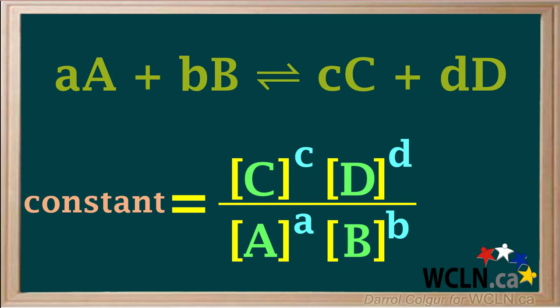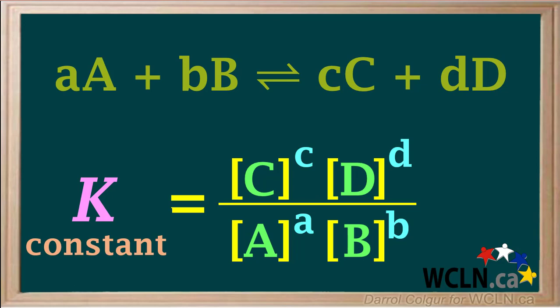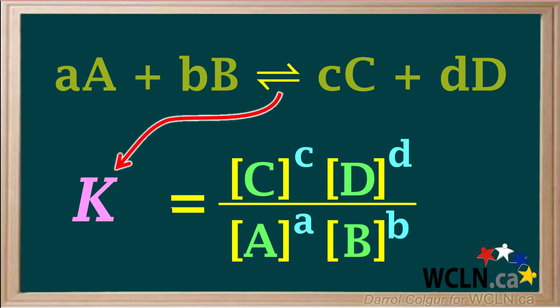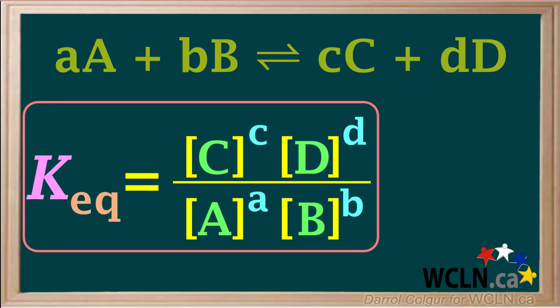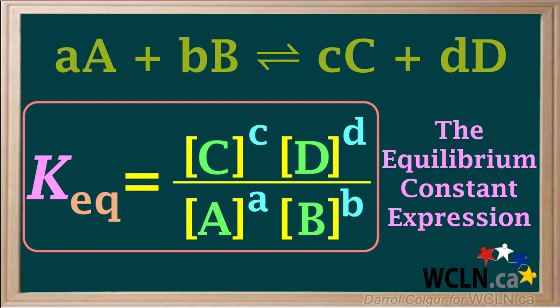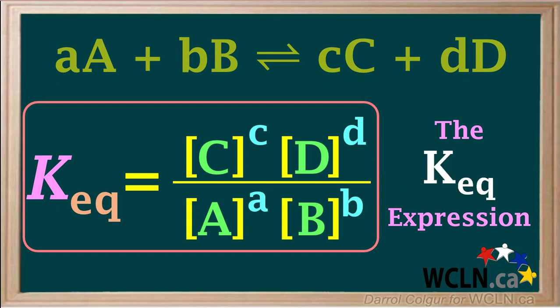Experiments show that as long as the temperature doesn't change, the value of this expression is constant, which we'll call constant K. And because our reaction is at equilibrium, we call it Keq. This whole expression is called the equilibrium constant expression, or simply the Keq expression.